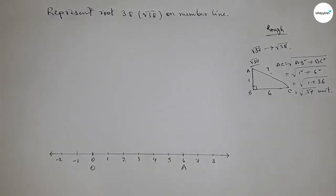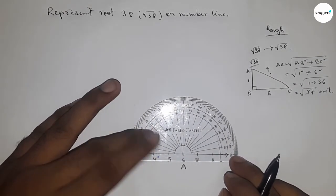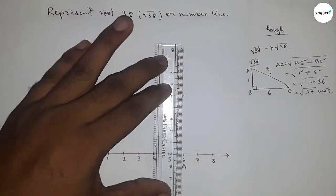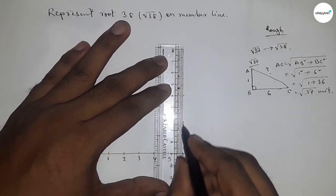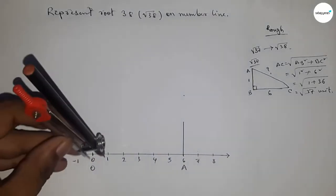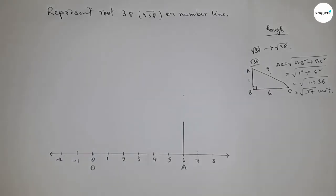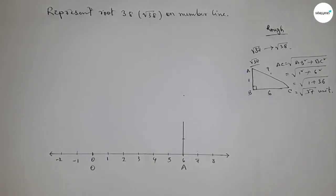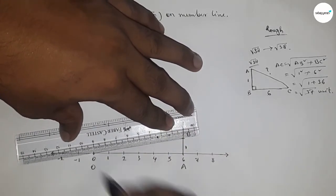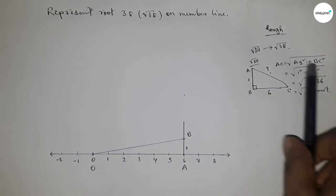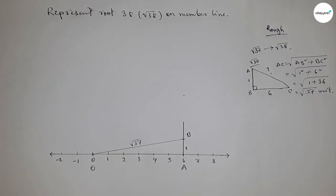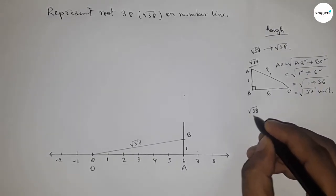We apply this concept on the number line between point O and point A. Draw a 90 degree angle at point A using a protractor to get a perpendicular line. Take the unit length by compass and cut at point B — this is one unit length. Join O to B, so OB equals root 37 units.